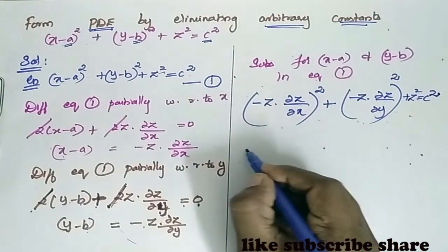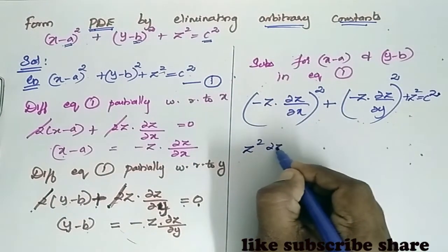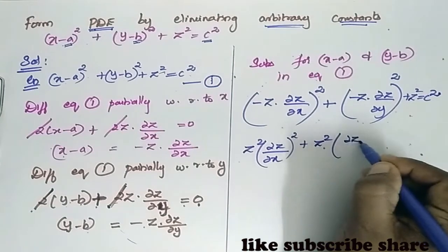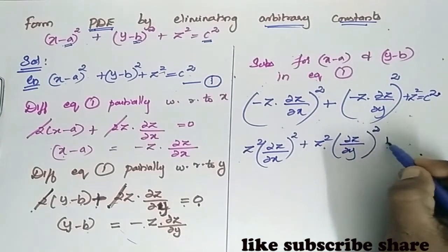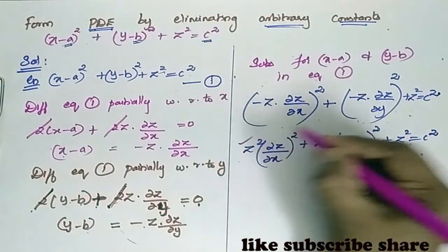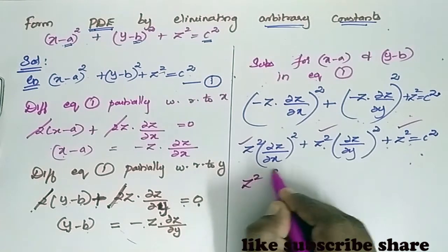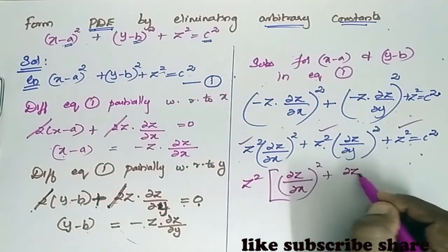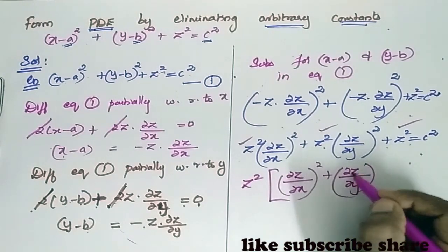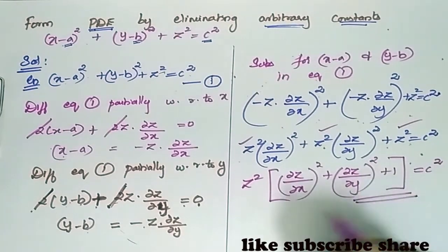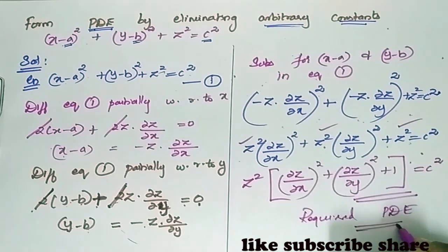Expanding the whole squares: z² times (∂z/∂x)² plus z² times (∂z/∂y)² plus z² equals z². Dividing through by z², we get (∂z/∂x)² plus (∂z/∂y)² plus 1 equals z². This is the required partial differential equation.